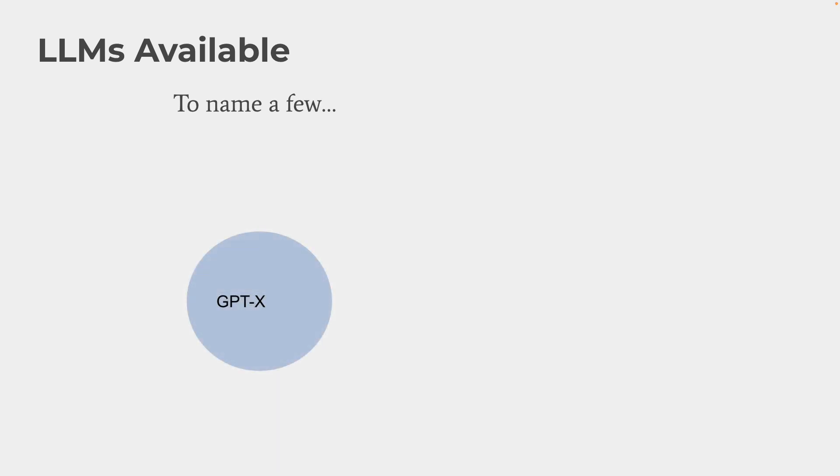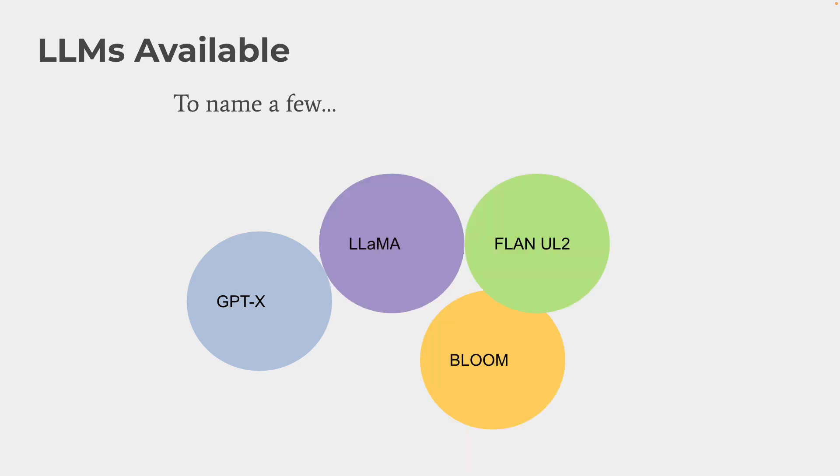There are many large language models available. Usually people just call them language models or models, since it's assumed they're large. We have GPT-3.5, GPT-4, and by the time you're watching this there may be even newer versions. We also have LLAMA, BLOOM, FLAN-UL2, and of course ChatGPT as its own model.